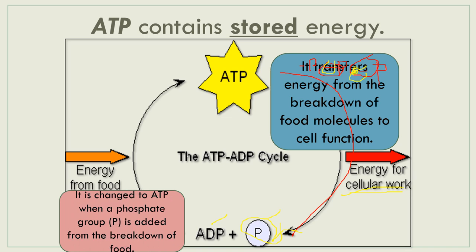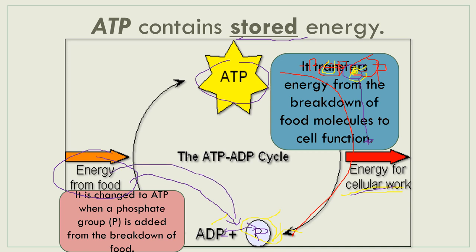What happens next? When a phosphate group is added back from the breakdown of food, the ADP is changed back to ATP. The energy from food allows the phosphate group to combine again with ADP, forming ATP once more. This is what we mean when we say ATP contains stored energy — that stored energy proceeds and provides energy for cellular work. Once ATP breaks apart and ADP and phosphate are separate, we need to restore the energy using energy from food.